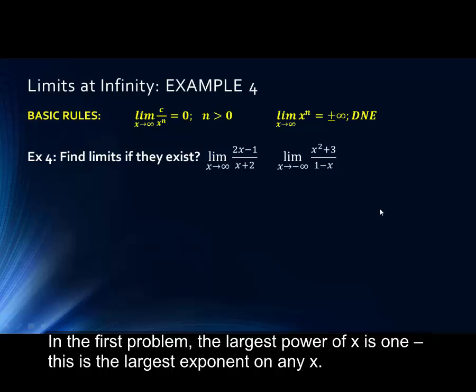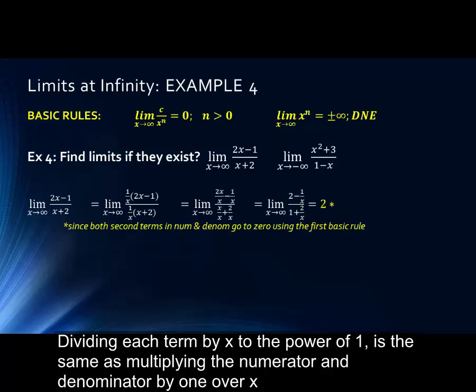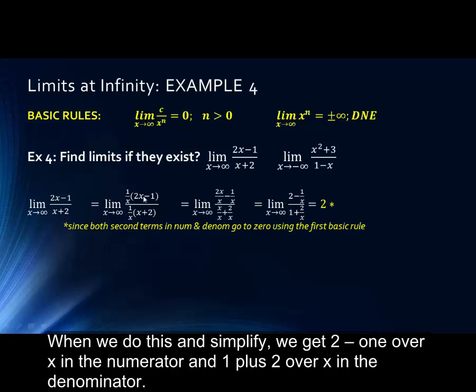Let's do the first problem together and then you can pause and do the second problem on your own. In the first problem, we can see that the largest power is 1. That is the largest exponent on any x in the equation. Dividing each term by x to the power of 1 is the same as multiplying the numerator and denominator by 1 over x. When we do this and simplify, we get 2 minus 1 over x in the numerator and 1 plus 2 over x in the denominator.